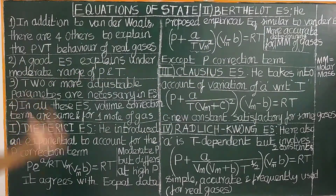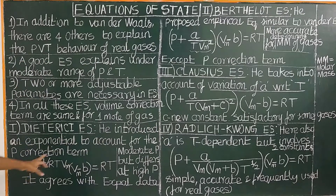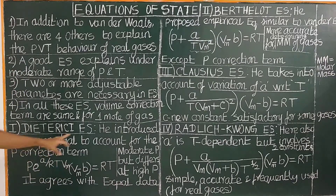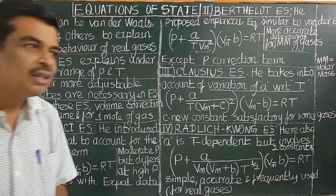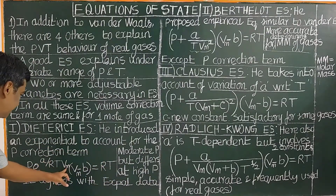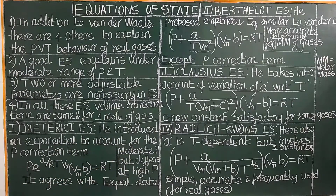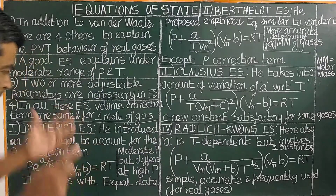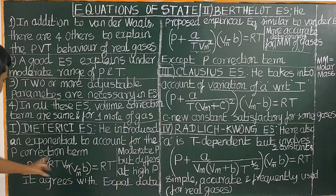Let us first study the Dieterici equation of state. In this equation, the pressure correction term is replaced by an exponential factor: P·e^(A/RT·Vm), (Vm − b). This equation is very good for moderate pressure and agrees well with experimental data, but it fails at high pressure.